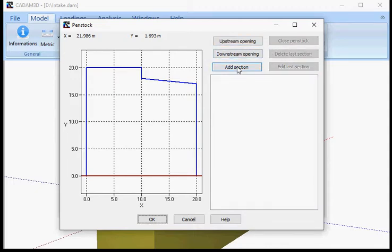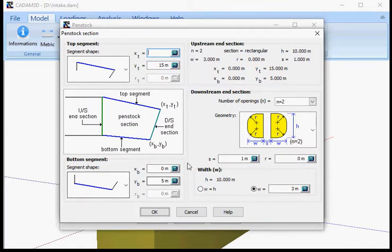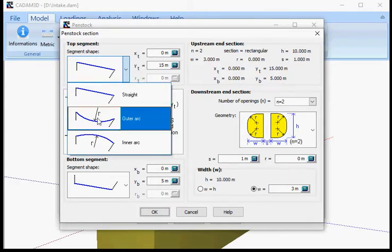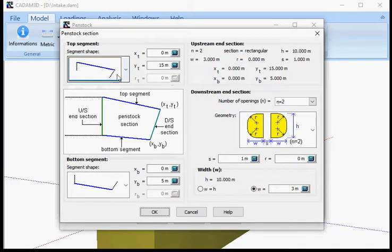We're going to add a section. We defined our opening upstream and downstream. Now we want to start from the upstream and go to the downstream opening by adding sections. The section is composed of a top segment and a bottom segment. You may define a straight line for your top segment, an outer arc, or inner arc.